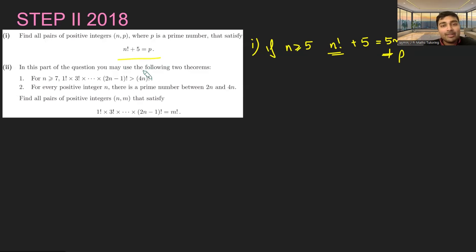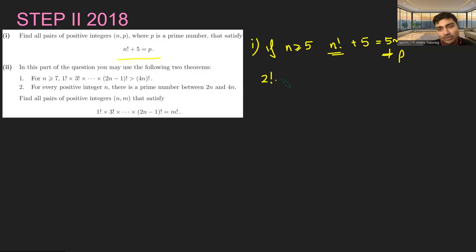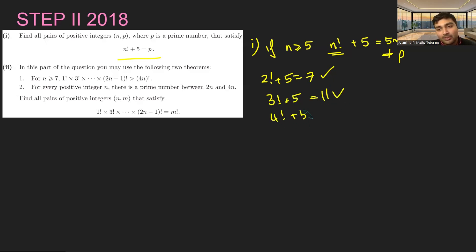So if there's any hope of solutions, we need n to be less than 5. Let's just test them one by one. If n is 1, you get 1 plus 5, that's 6 — doesn't work. 2 factorial plus 5 is 7 — that does work. 3 factorial plus 5 is 6 plus 5, which is 11 — that does work. And 4 factorial plus 5 is 24 plus 5, that's 29 — that does work as well. So you get three solutions to part one.